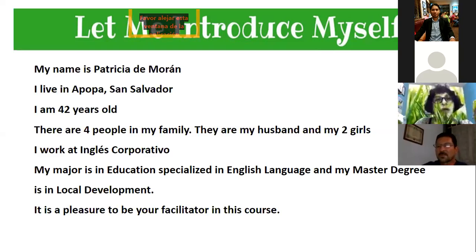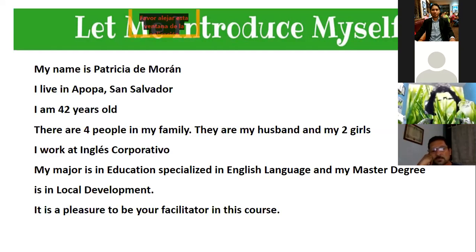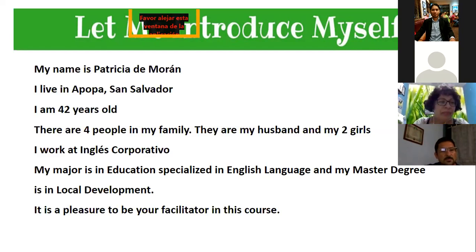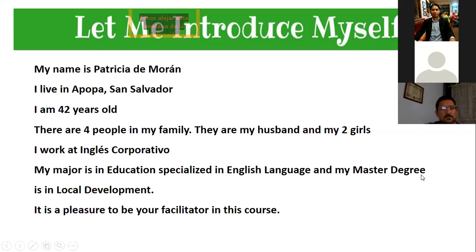My name is Elizabeth Gonzalez. I live in San Salvador. There are three people in my family — my two daughters and a son. I work from home. Excellent! Let's see — maybe Julio Figueroa, would you like to go? And then Jennifer Aquino.